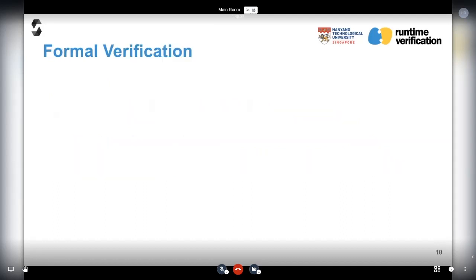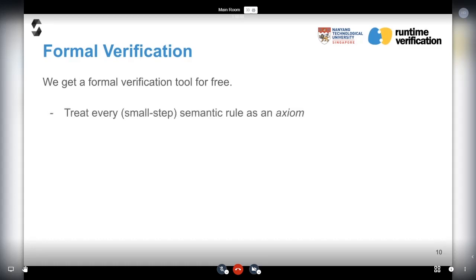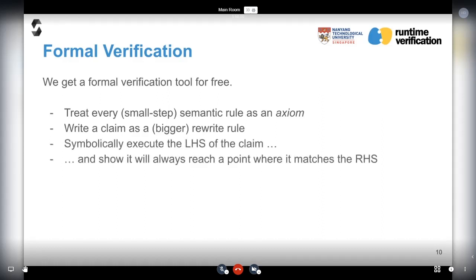Let's go to formal verification. From a semantics written in this formalism, there's a straightforward way to reason about program execution. The K-framework derives a prover for free. The basic idea is: you treat every rule as an axiom, write a claim as a rewrite rule, start from the left-hand side, apply all axioms that match, branching whenever there's more than one thing that applies, and show that on every branch you reach the state that matches the right-hand side.